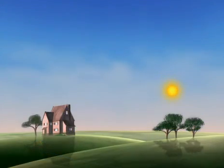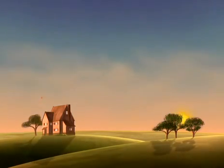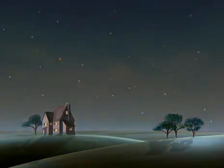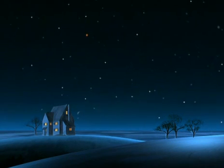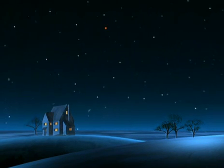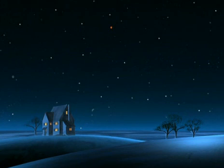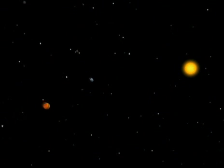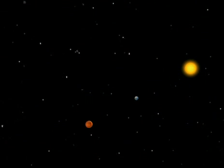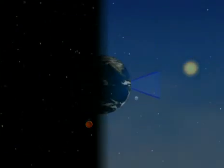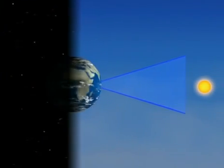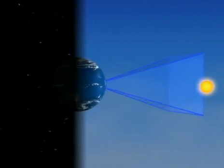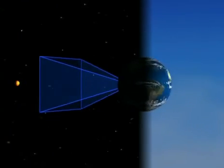Seen from Earth, just as the Sun sets in the west, Mars rises in the east. Towards midnight, Mars, in opposition, is due south — Mars glows yellow among the white stars. When the Earth is between Mars and the Sun, Mars is opposite the Sun. At noon, we see the Sun due south. At midnight, it's Mars we see due south.